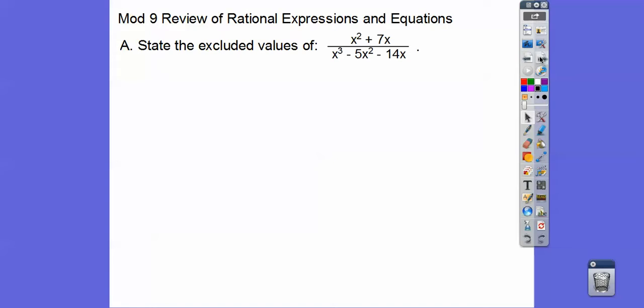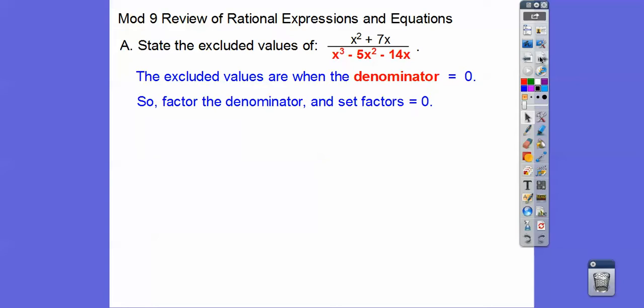So state the excluded values. The excluded values are when that denominator equals 0. So let's factor that denominator and then set those factors equal to 0. Those will be our excluded values. So we can pull an x out of all of those, and so it's x and then x squared minus 5x minus 14. And then factors of negative 14 are negative 7 and positive 2.